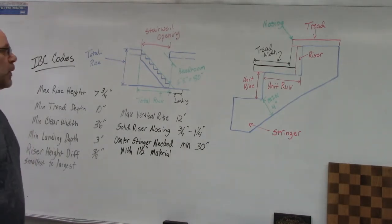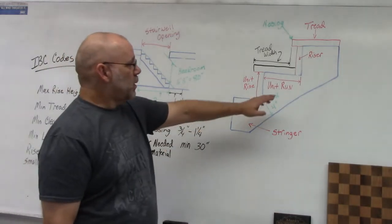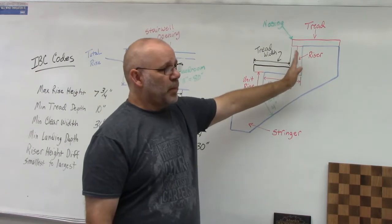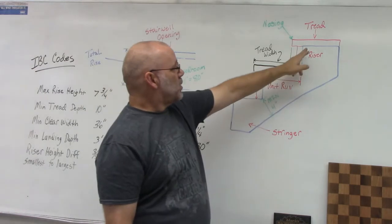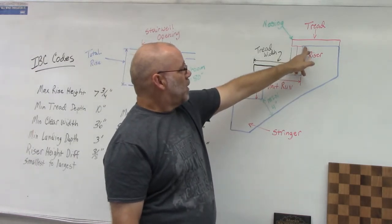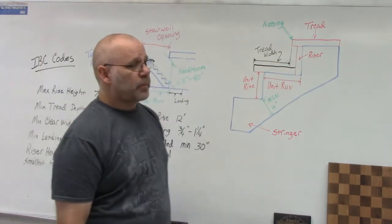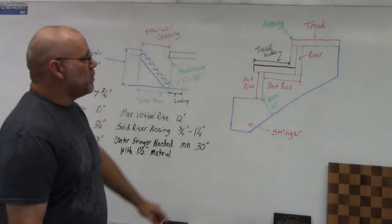The first code is the maximum riser height, which is seven and three-quarter inches. The riser is the board that fills in the back so you can't see underneath the stairs. It's measured from the top of one tread to the next tread.